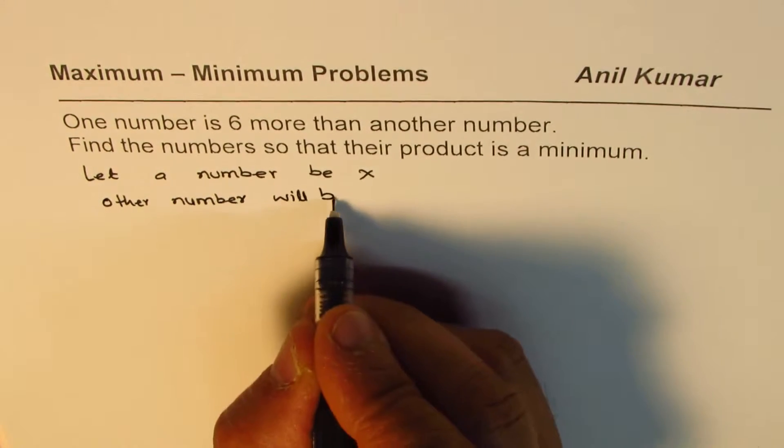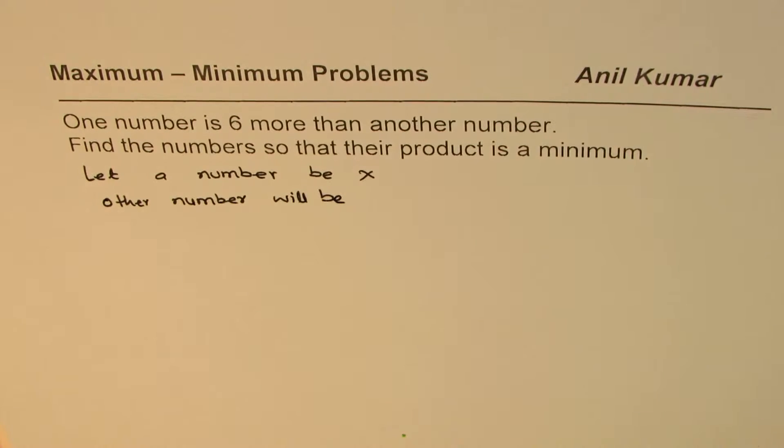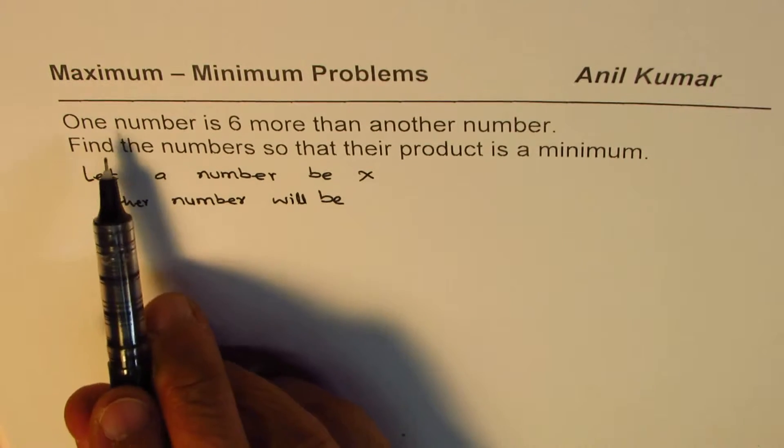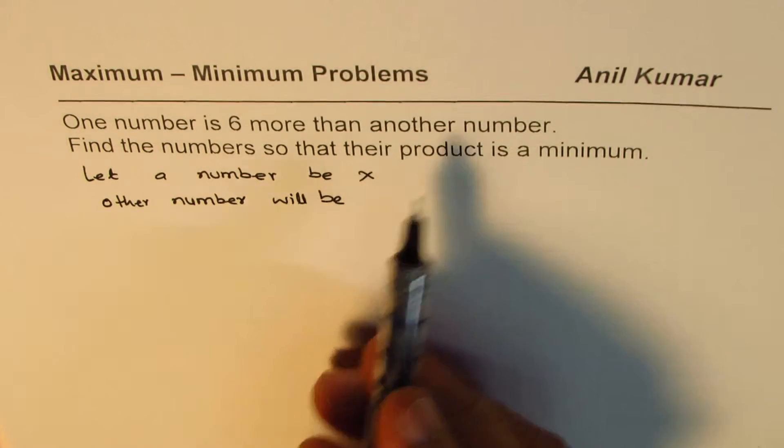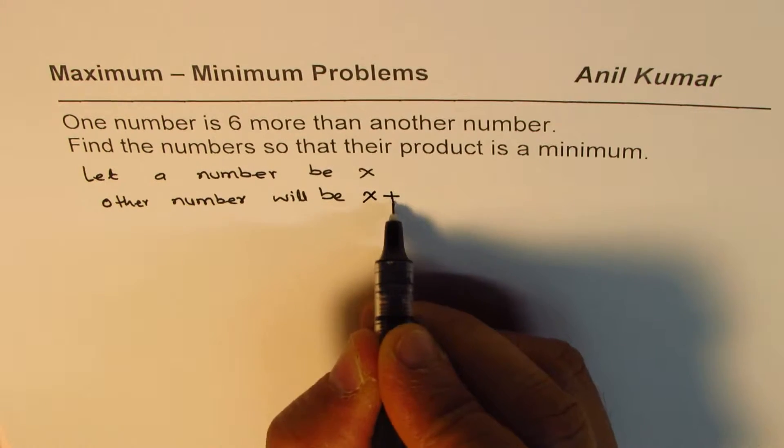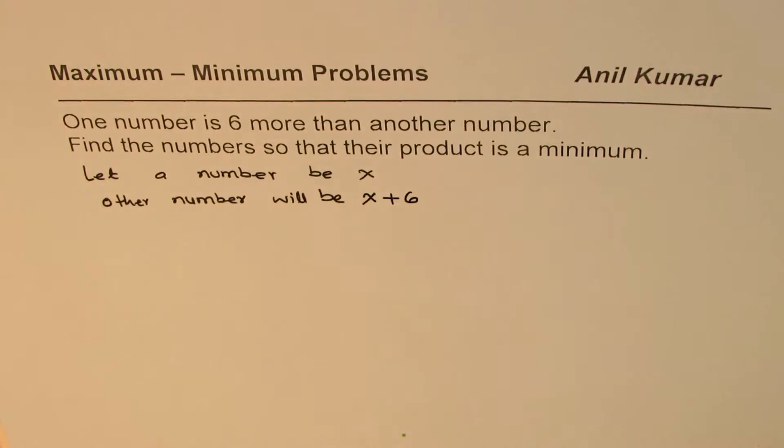Now you would say Y, right, and then solve for X and Y. But here in such cases we can work with single variables. One number is six more than another, so six more than what we have. So the other will be X plus six. Does that make sense? So sometimes it is good to work with just one number. So one number is X, the other one is six more.